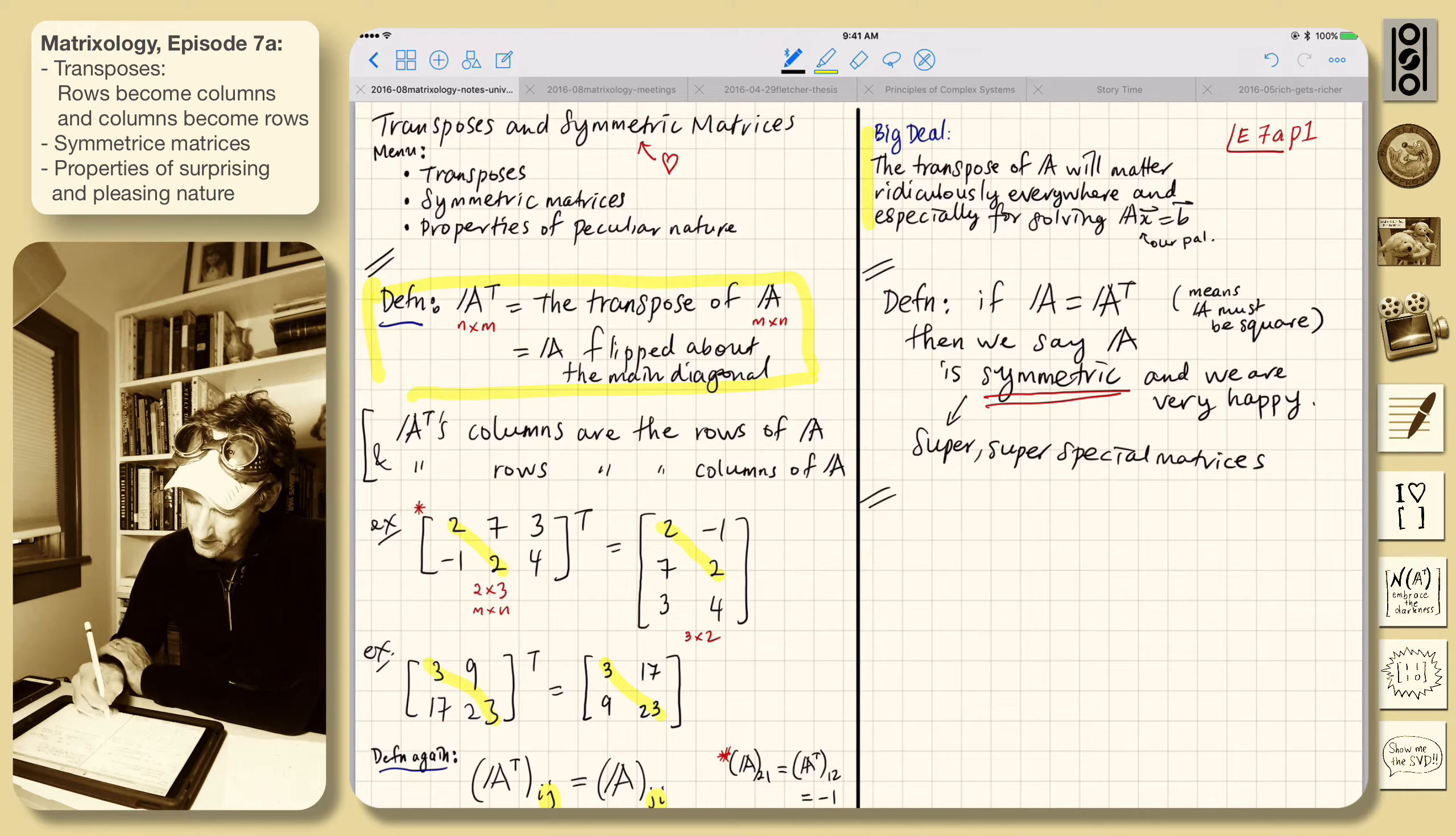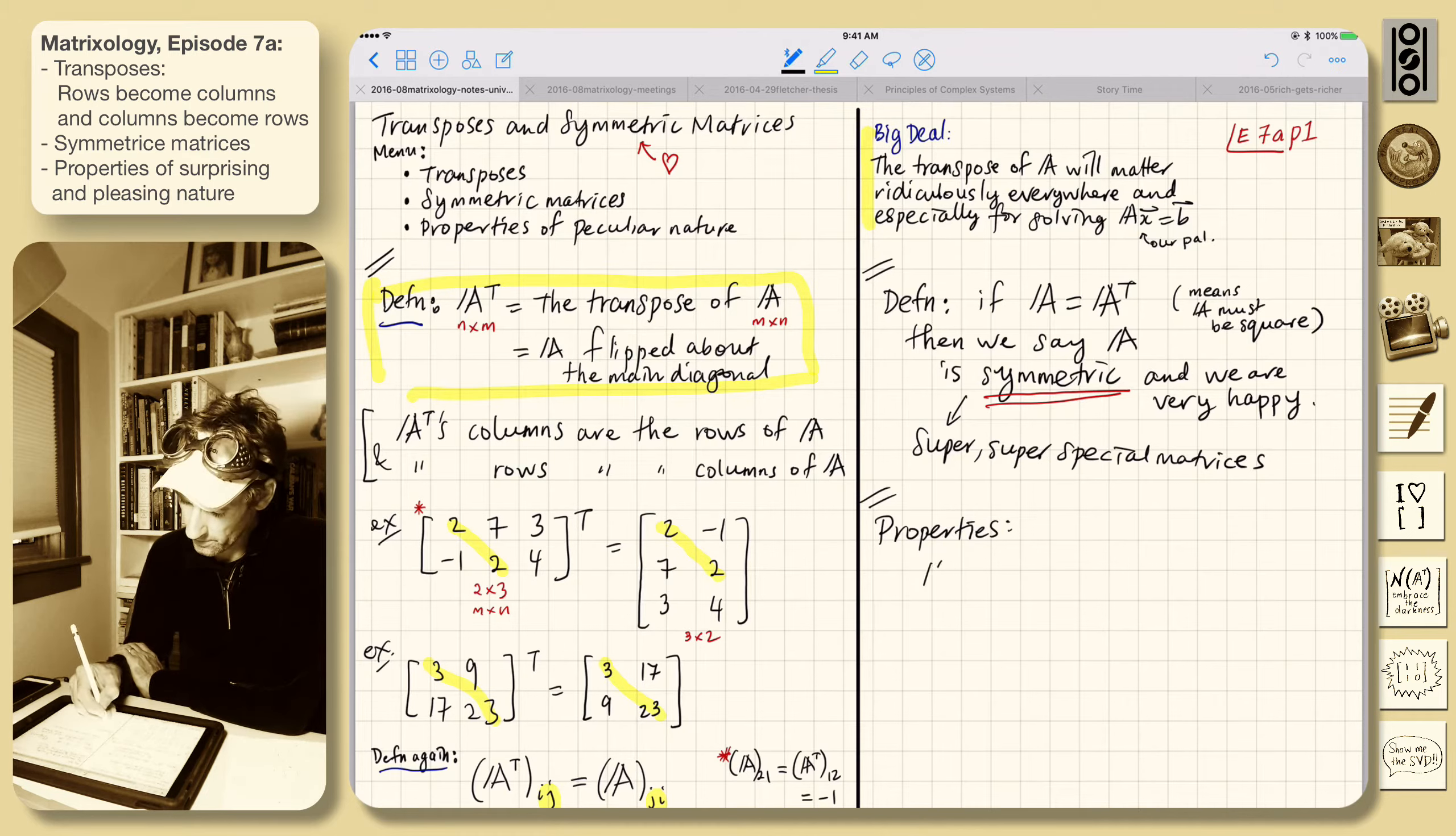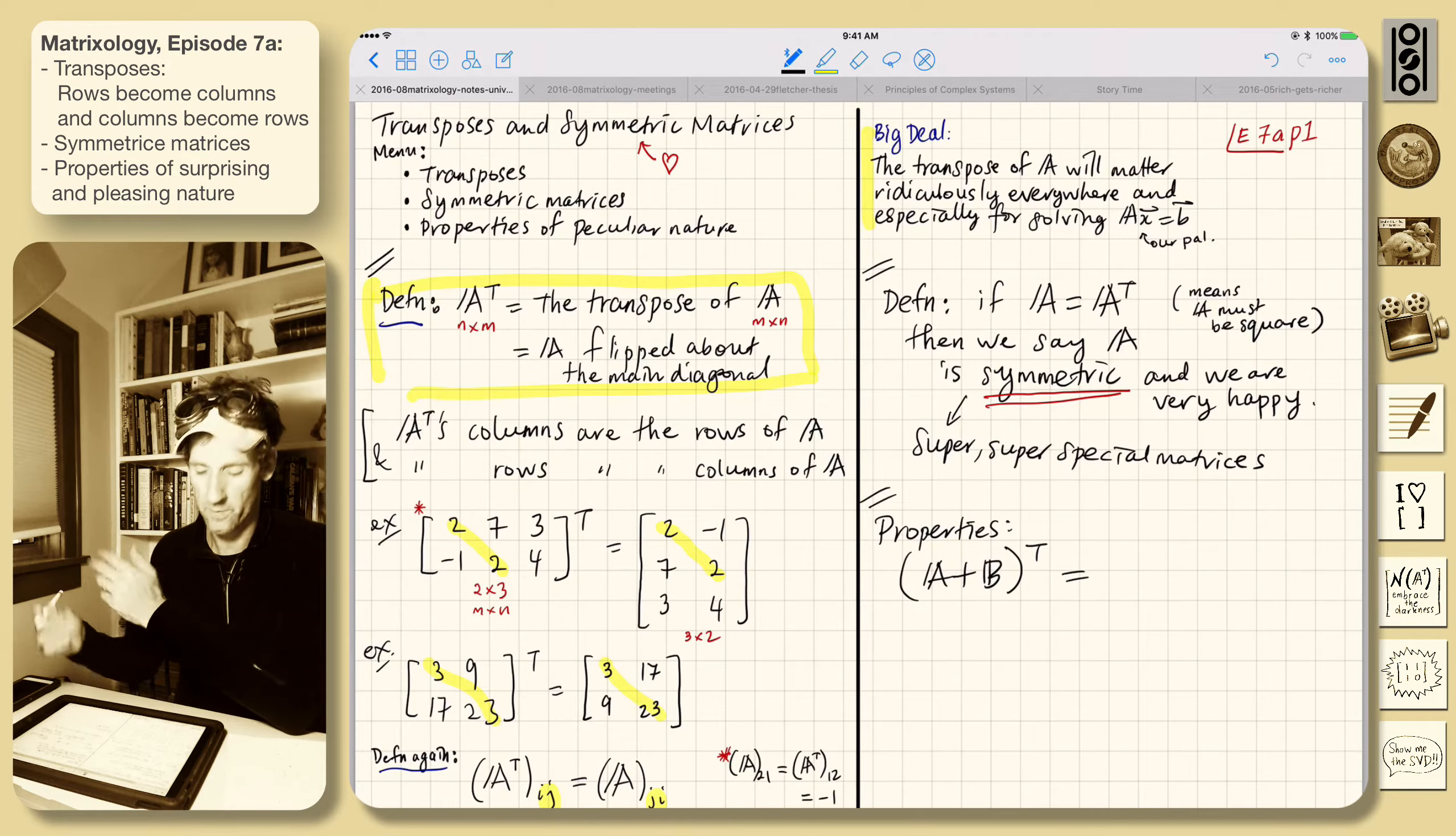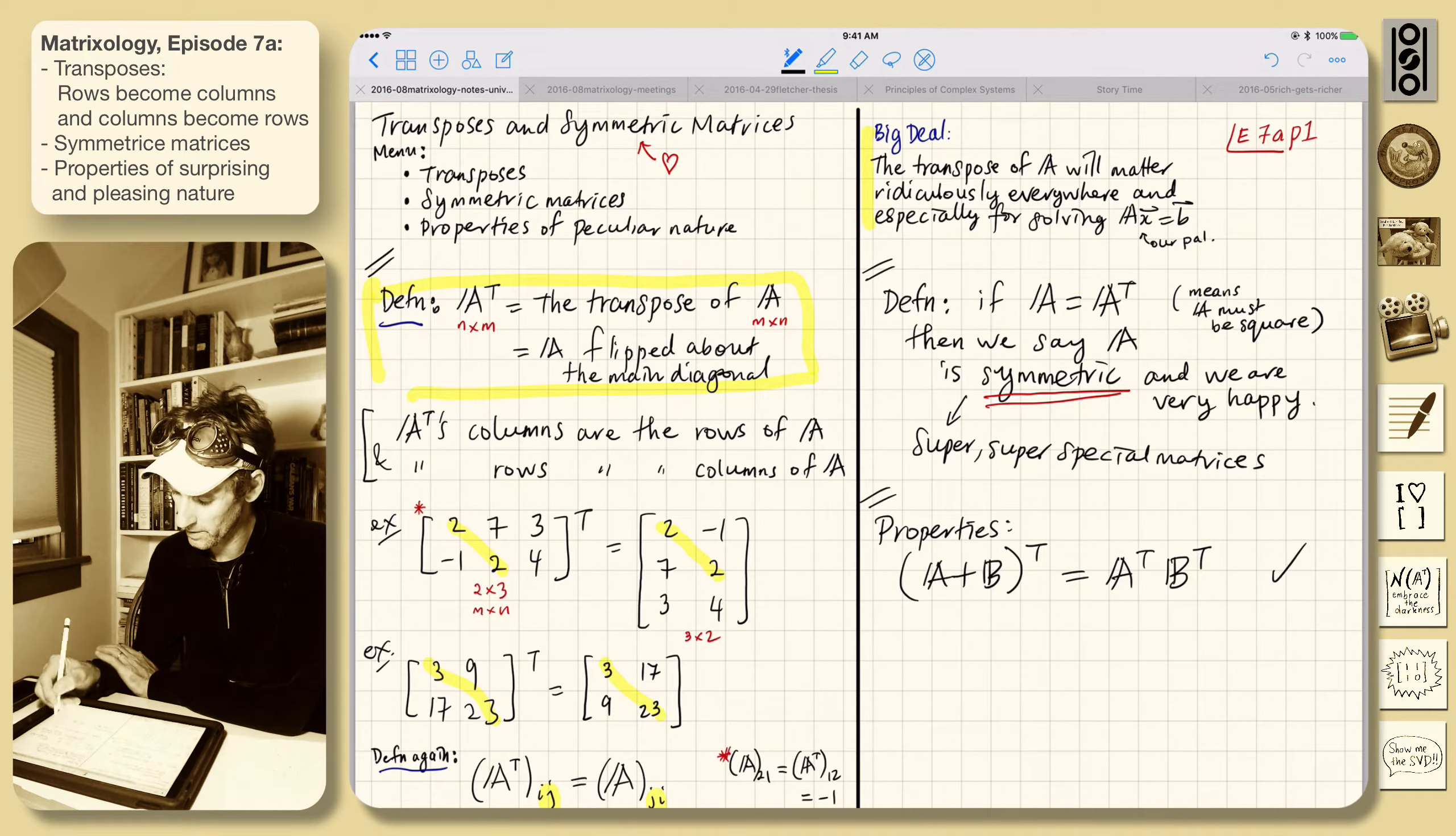We love them so much that we will make other matrices become symmetric by doing horrible things to them. Okay, so a couple of properties. After a fact, you'll see the properties. So simple thing would be A plus B, add them together, take the transpose. Well, you can take the transposes first. This is not a big surprise.